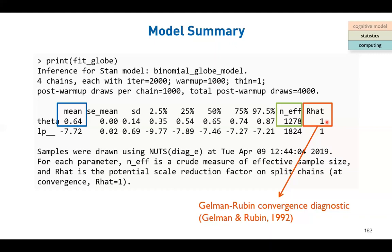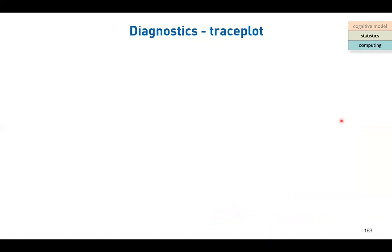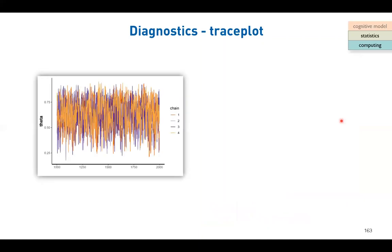If every parameter's R-hat is lower than 1.1, we can reasonably say the model is stable. Now we go to the next step: making the plot to see the shape of the posterior distribution, because that is what we are interested in. But first, let's see how the MCMC works - just one more time, the idea of the MCMC robots.